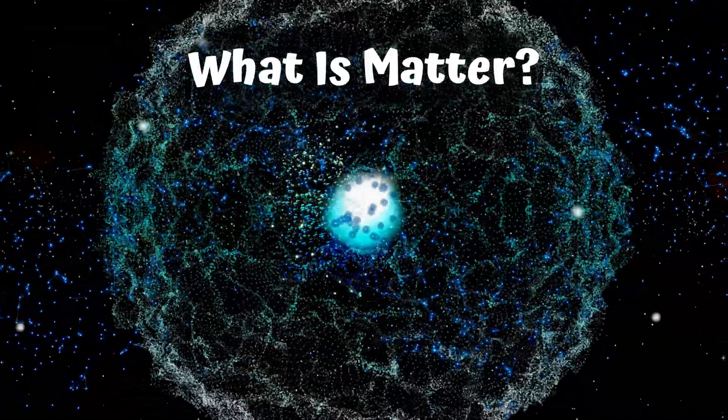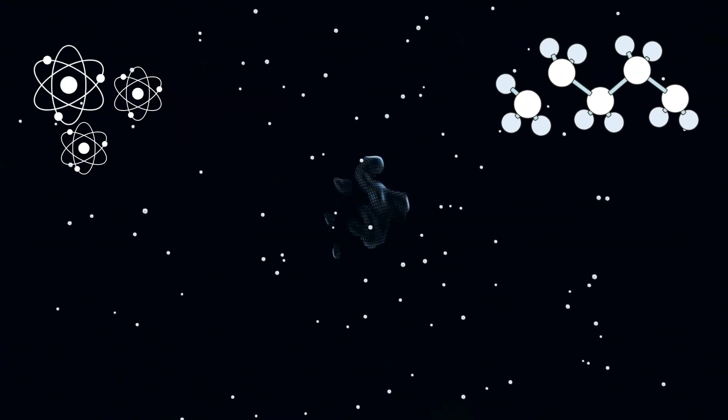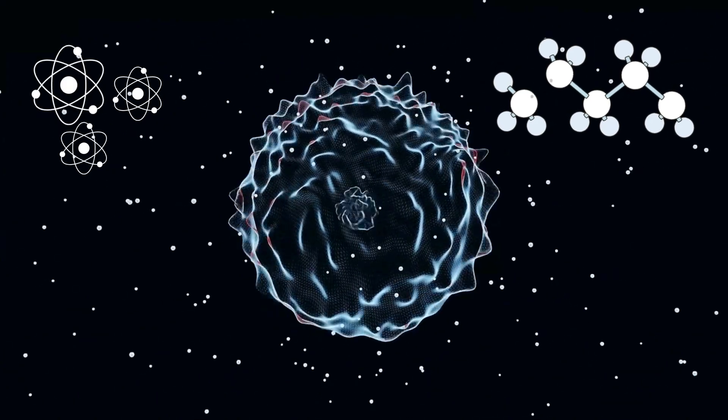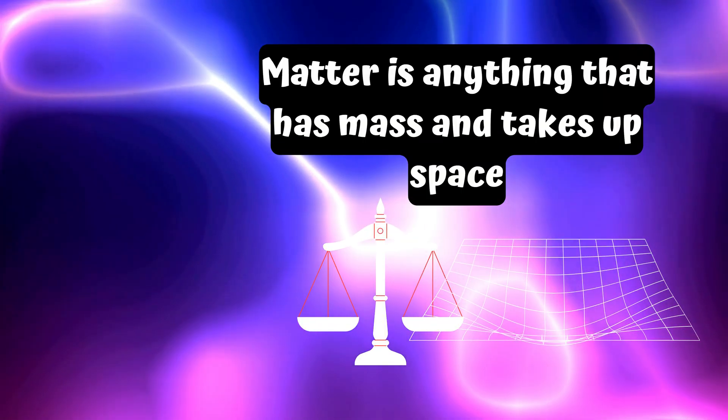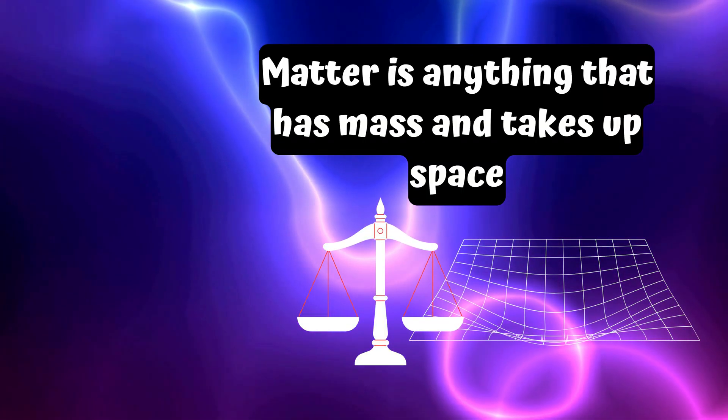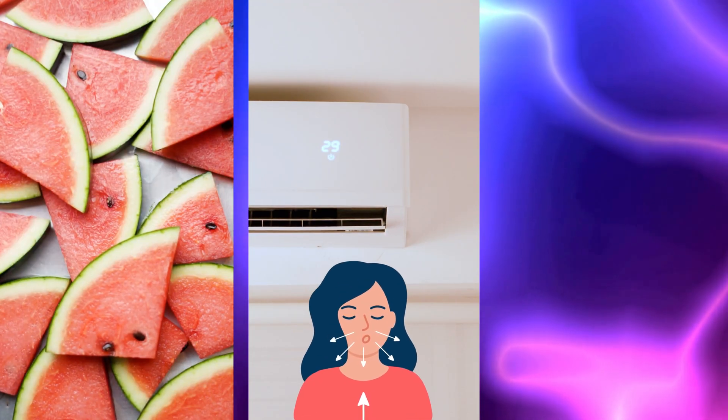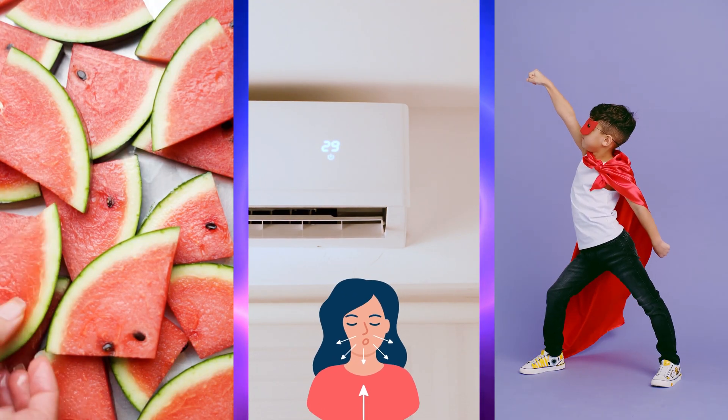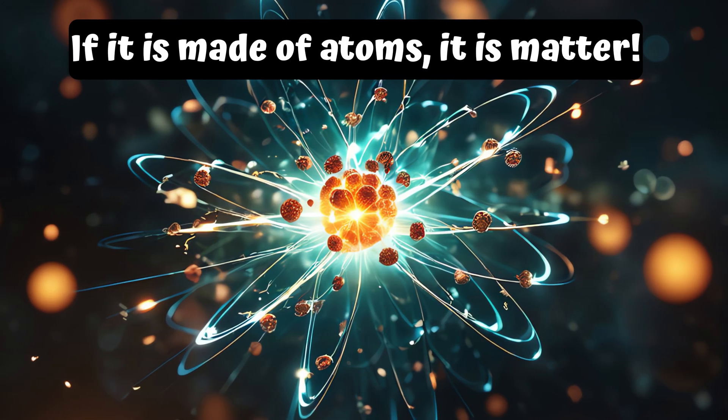Part 4. What is matter? Now that we know what atoms and molecules are, let's talk about what they make. Matter. Matter is anything that has mass and takes up space. That means a watermelon is matter. The air you breathe is matter. Even you are made of matter. If it is made of atoms, it is matter.